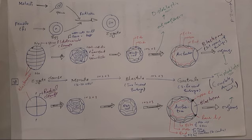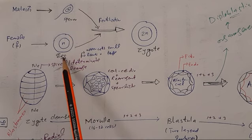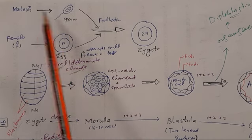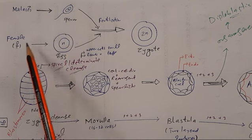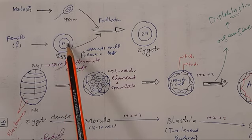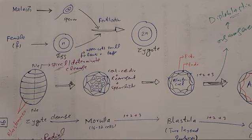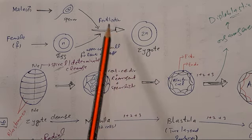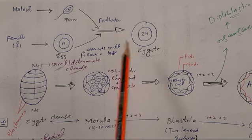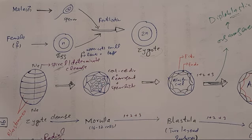Animals develop from the fusion of two dissimilar haploid gametes — the smaller sperm and the larger egg. The male produces haploid smaller sperm and the female produces haploid large egg or ovum. The fusion of male and female gametes — sperm and egg — is called fertilization, and fertilization results in the formation of a diploid zygote.